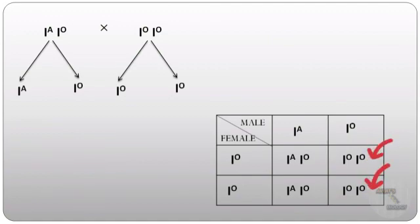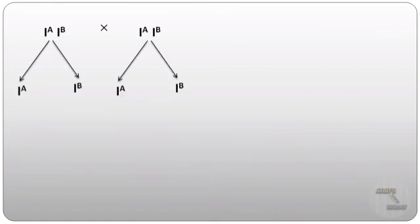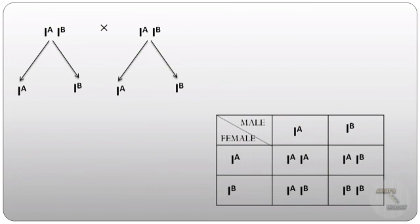Now if both parents have blood group AB, then from each parent we get gametes Iᴬ and Iᴮ. From the Punnett square, two of their children will have blood group AB, one child will have blood group A, and one child will have blood group B.